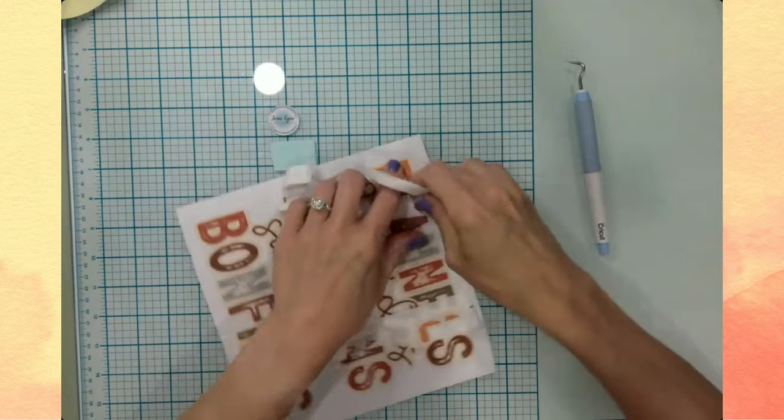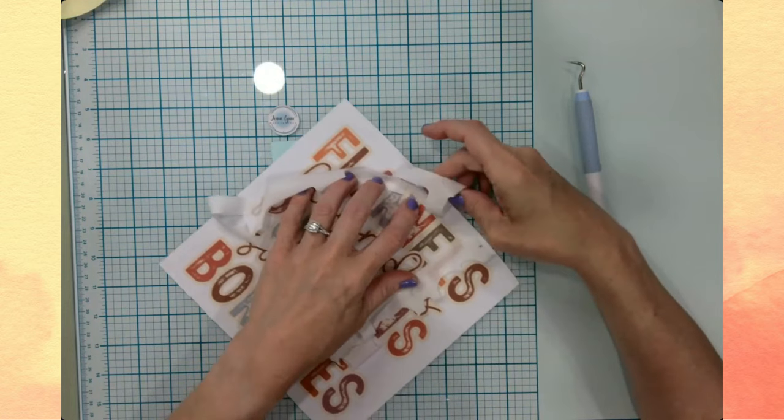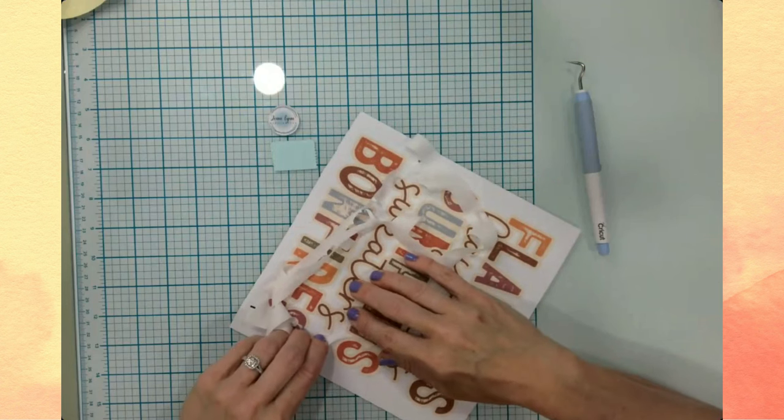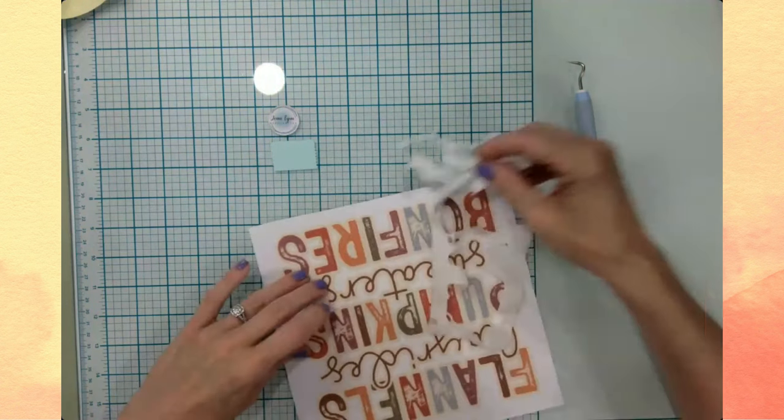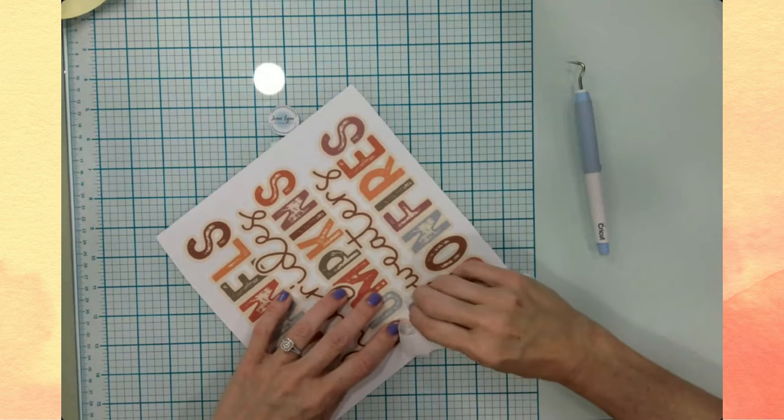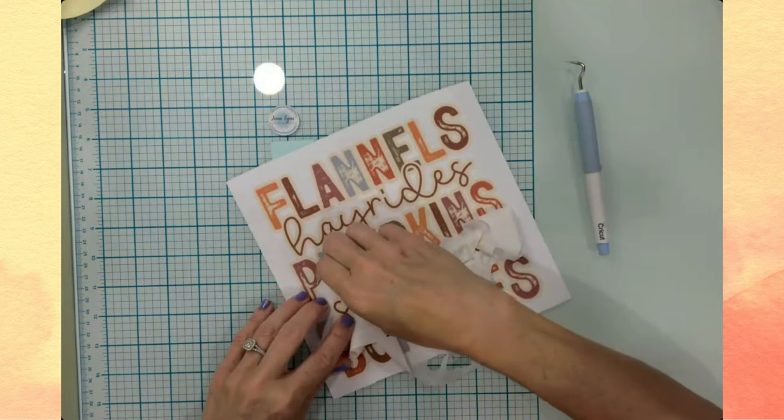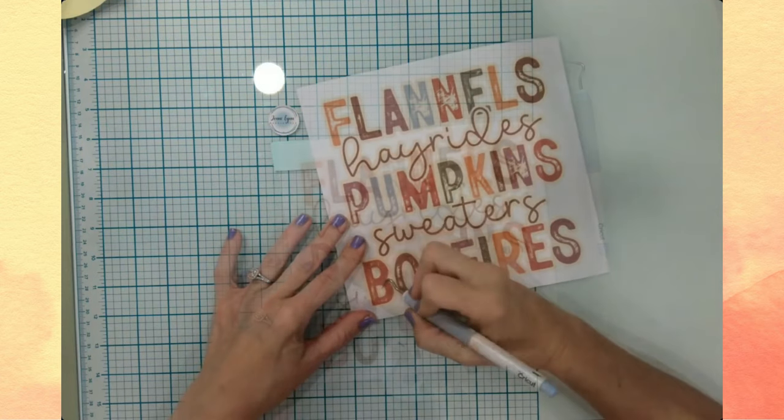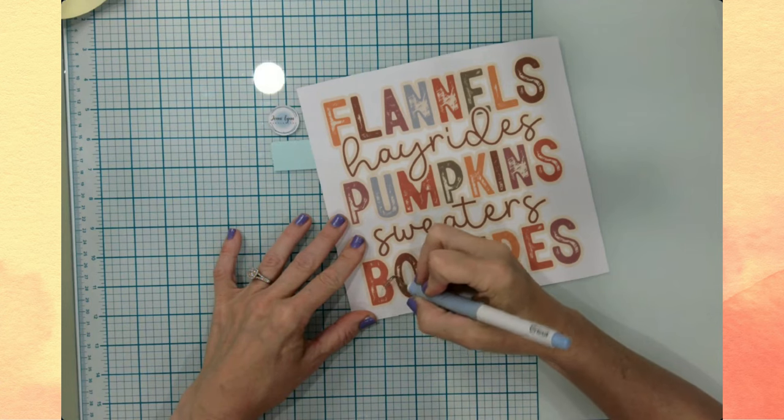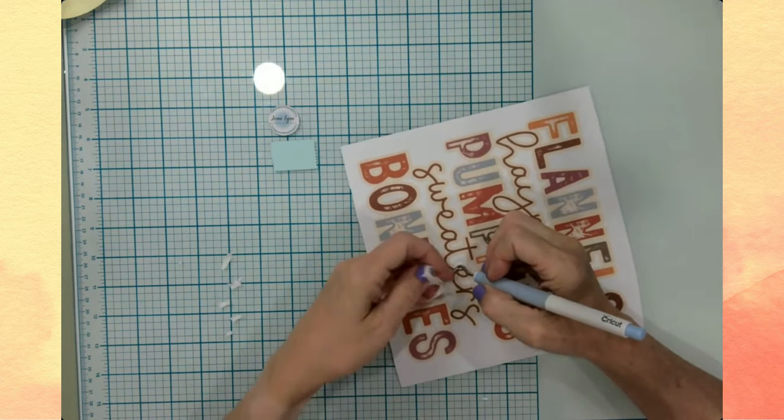So I thought this would look really cute on one of those little banners. I'm just pulling off this space carefully because I don't want to unnecessarily pull something off that needs to stay. There are some little pieces that I do need to weed out, these kind of these little middles.